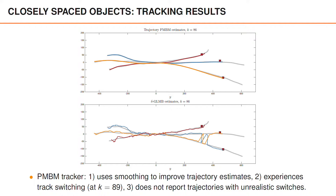Interestingly, the PMBM tracker also experiences a track switch between time steps 86 and 87. If you look closely at the trajectory estimates, you can see that the middle trajectory on the right-hand side is blue, whereas the bottom trajectory is orange. At time step 87, these two trajectories have swapped places with each other, meaning that we now think that the object that started in the middle remains in the middle, whereas the trajectory that started in the upper left corner crossed the other trajectories and continued down to the bottom right of the area.